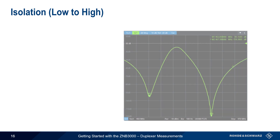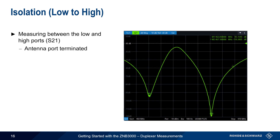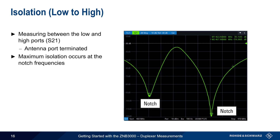Here is an isolation measurement made between the low and high ports, with the antenna port terminated. We see that maximum port-to-port isolation occurs at the notch frequencies, but isolation is still greater than 35 dB — and often much more — over the entire measured frequency range.